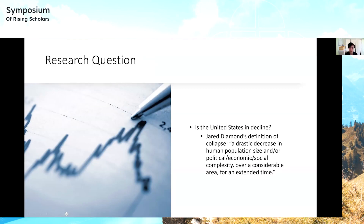Going into the research question in more detail — is the United States in decline? — the concept of decline can be a little vague at first, but I'm using historian Jared Diamond's definition. He proposed a drastic decrease in human population size and/or political, economic, and social complexity over a considerable area for an extended time. For the purposes of my project, I found this definition to be relatively useful and workable.